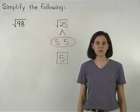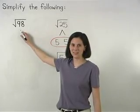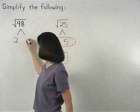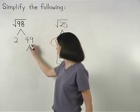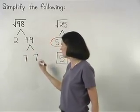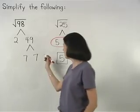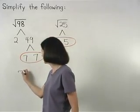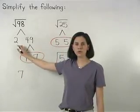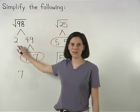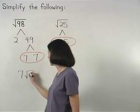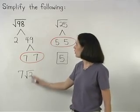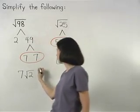The same technique can be used to simplify the square root of 98. Notice that 98 factors as 2 times 49, and 49 factors as 7 times 7. So we have a pair of 7s in our factor tree. This means that a 7 can come out of the radical. And notice that we have a 2 in our factor tree that doesn't pair up. This means that a 2 stays inside the radical, which gives us 7 times the square root of 2.